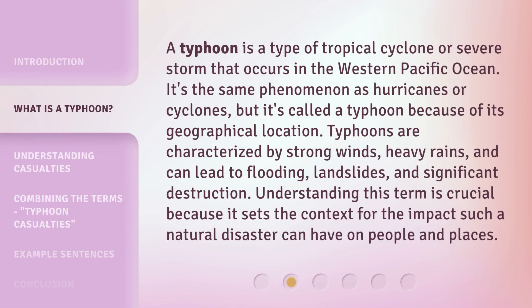A typhoon is a type of tropical cyclone or severe storm that occurs in the western Pacific Ocean. It's the same phenomenon as hurricanes or cyclones, but it's called a typhoon because of its geographical location. Typhoons are characterized by strong winds, heavy rains, and can lead to flooding, landslides, and significant destruction. Understanding this term is crucial because it sets the context for the impact such a natural disaster can have on people and places.